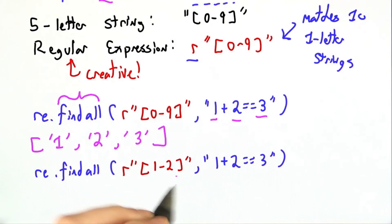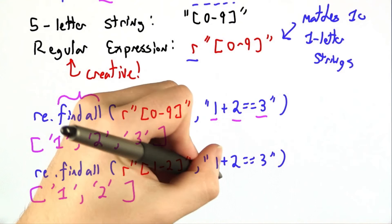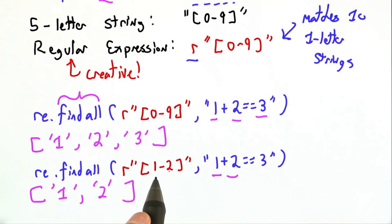This one only matches two single letter strings, so we'll get out 1, 2. These two match, the 3 does not, because it's not between 1 and 2. It's not specified or matched by this regular expression.